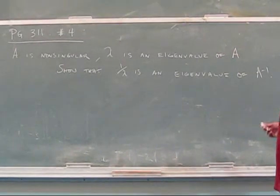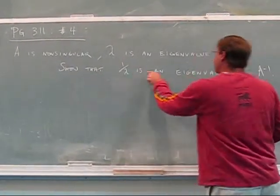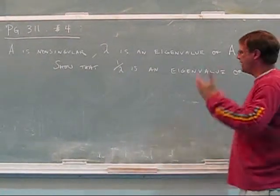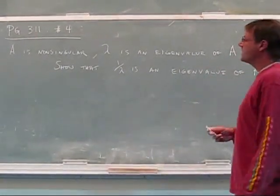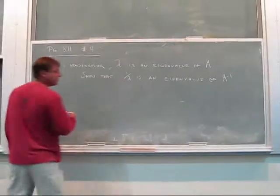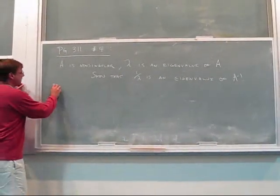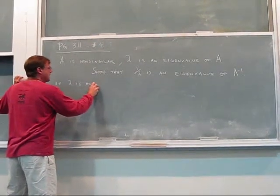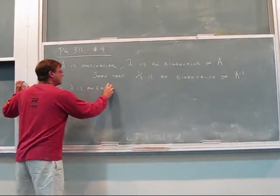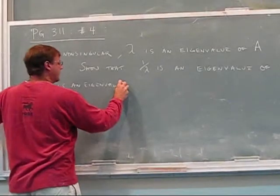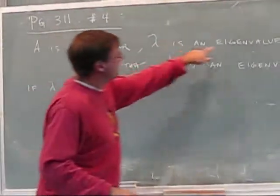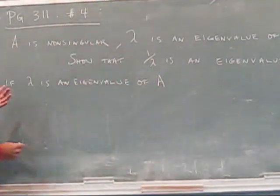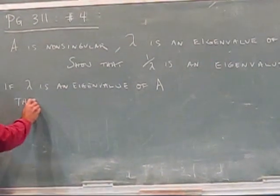OK, so we have this information. We have to show that 1 over lambda is an eigenvalue of A inverse. So that seems a little intimidating. How am I going to do that? Well, first let's investigate what an eigenvalue really is. OK, so if lambda is an eigenvalue, which we have, right? Lambda is an eigenvalue of A. Then that tells us something very specific.